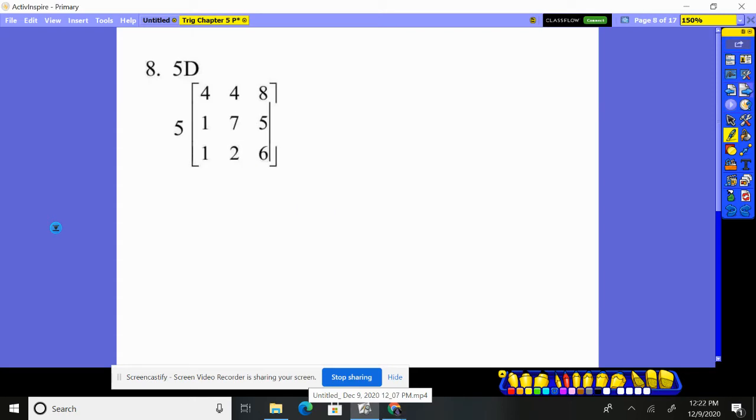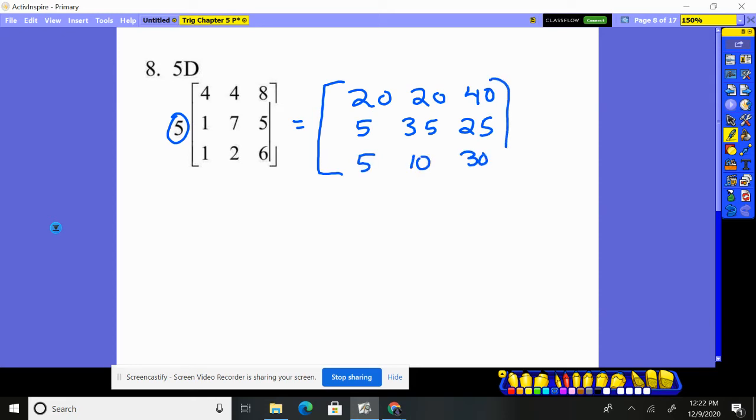What if I multiply by a number on the outside? You just distribute it through, that's all you do. So I might have what? 20 and 20, five times eight, 40. As long as I can multiply by five, I will have the correct answer. 10 and five times six is 30. Okay, those are super simple.